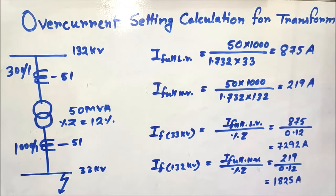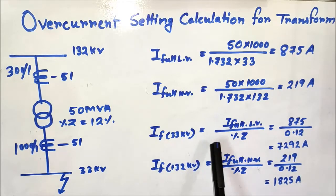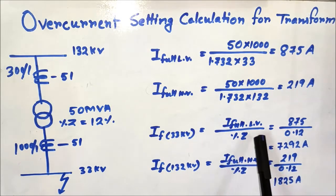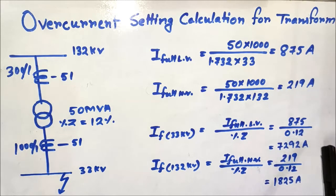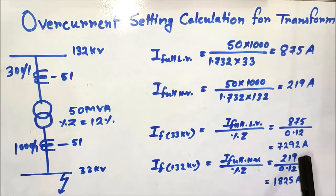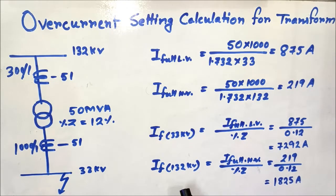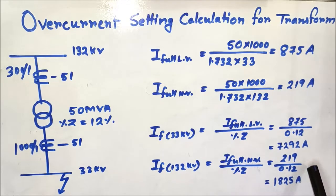Now, for a three-phase fault occurring exactly on the 33kV bus, the fault current on the LV side is equal to the full load current divided by percentage impedance: 875 divided by 0.12, which gives 7292 amperes, or 7.292 kilo-amperes. On the HV side, the reflected fault current is 219 divided by 0.12, which comes to 1825 amperes, or 1.825 kilo-amperes.